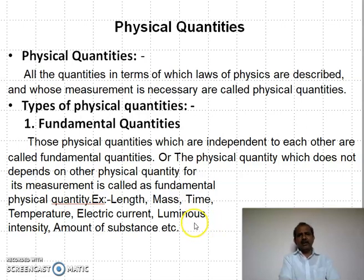Fundamental quantities means physical quantities which are independent of each other. In other words, these quantities are invariant or independent of each other. Examples: length, mass, time, temperature, electric current, luminous intensity, amount of substance. These are examples of fundamental physical quantities.